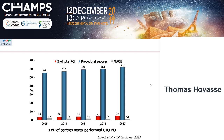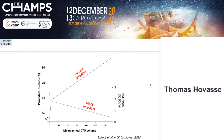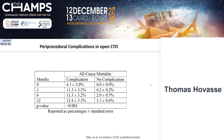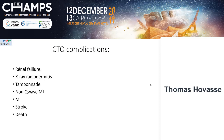Not all centers perform CTO PCI, and there is a lot of variability between centers and operators in terms of experience. To be comfortable with CTO — and especially difficult CTOs — a center should perform at least 100 CTOs annually. A good CTO operator should perform at least 30 to 50 CTOs per year. Complications are also an issue in CTO treatment: when you have a complication, the prognosis is very different. Tamponade, myocardial infarction, stroke, and death are concerns, but X-ray exposure and renal failure are also not rare, and you have to put this all in the balance.